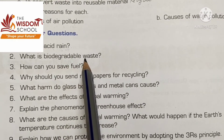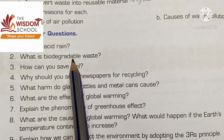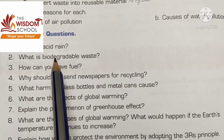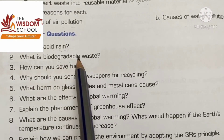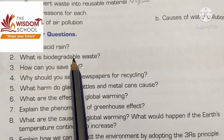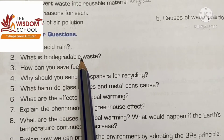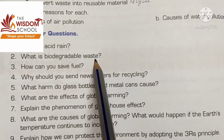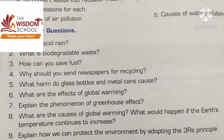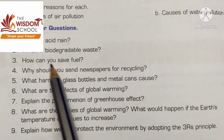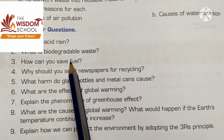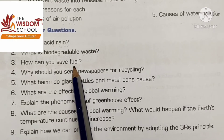What is biodegradable waste? Waste that can be easily decomposed is called biodegradable waste. These wastes rot and turn into manure. How can you save fuel? We can save fuel by walking short distances, using bicycles, and using public transport.